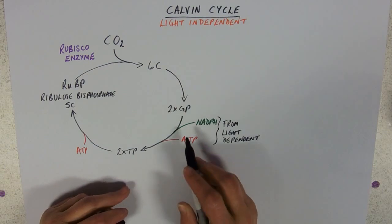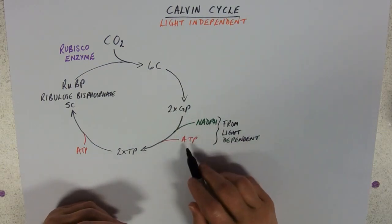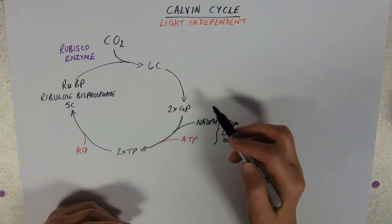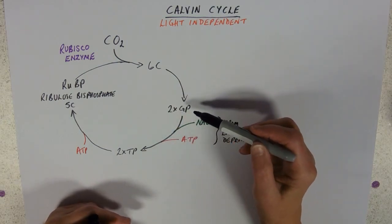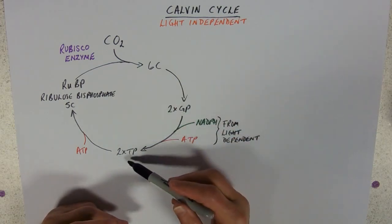Now where are they going in between? They're going in between this thing called GP and this thing called TP. So these two things must be converting GP, whatever that may be, into TP.